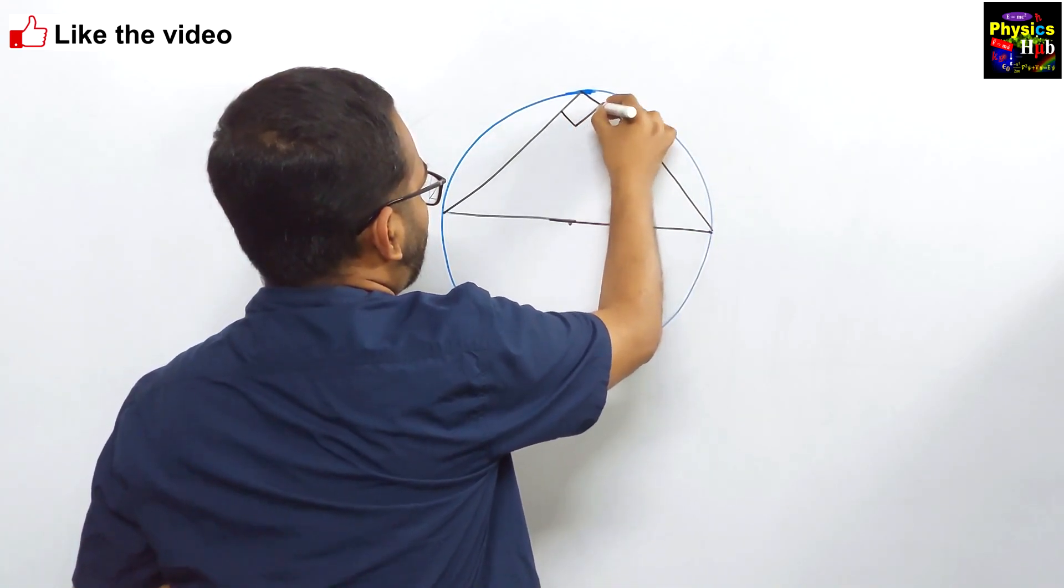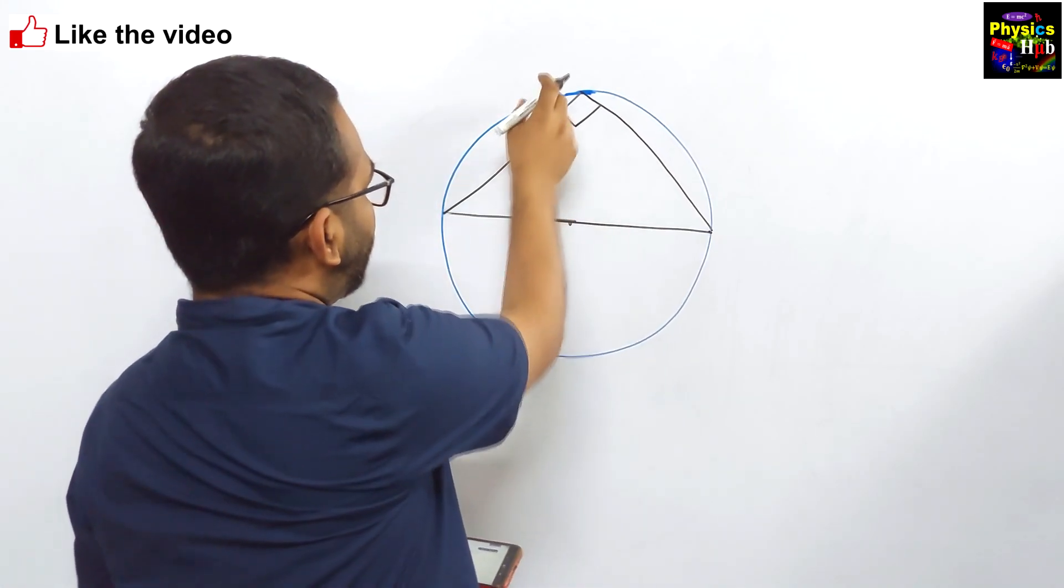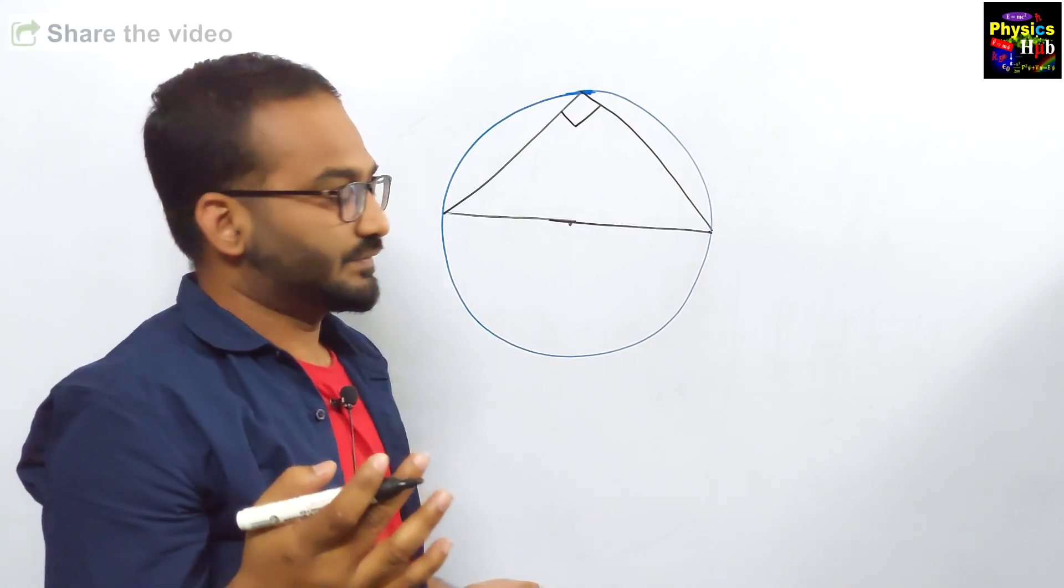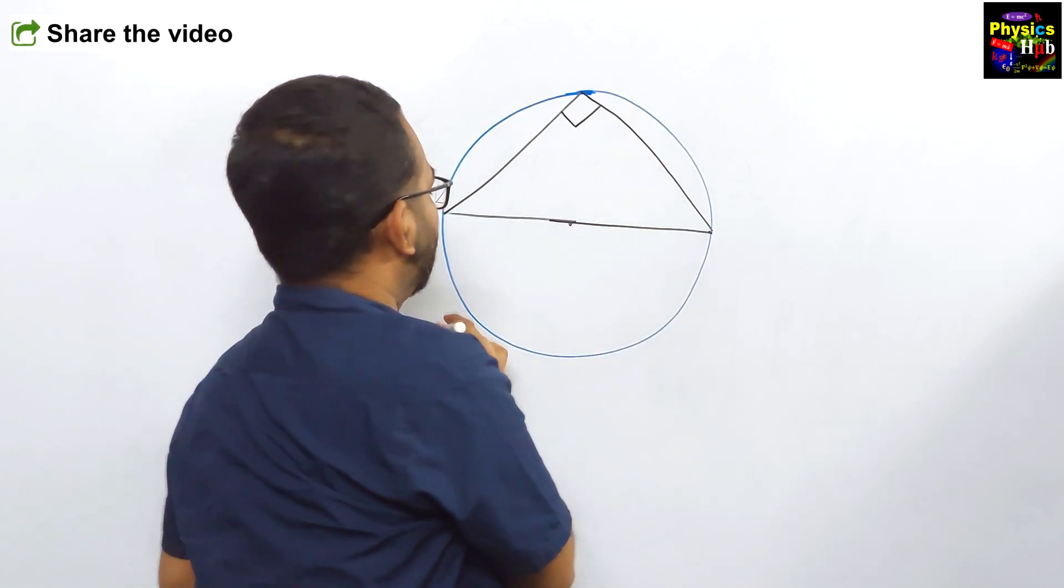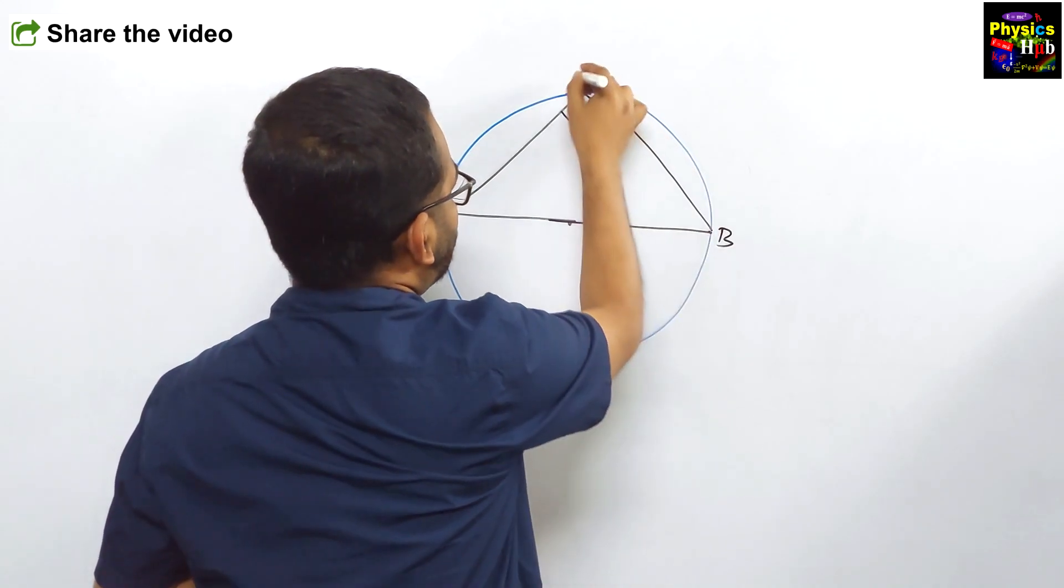So this will be 90 degrees always, whatever point you take. And if you join that point to these two points, this angle will always be 90 degrees. So this is a right angled triangle. Let us name it A, B, C.